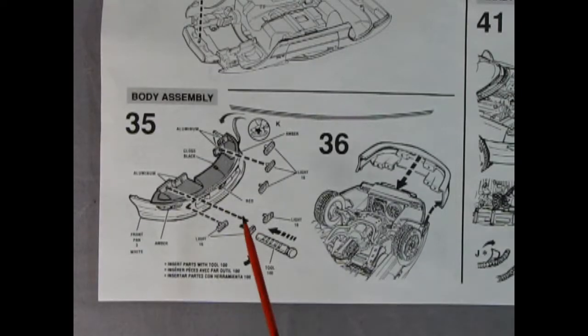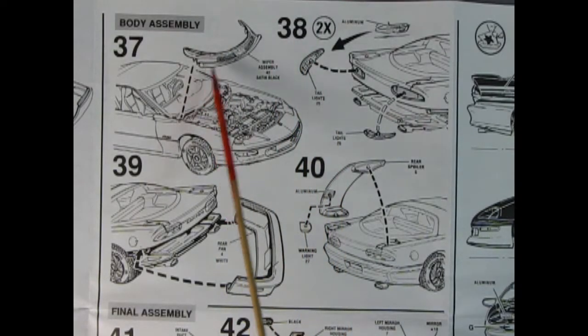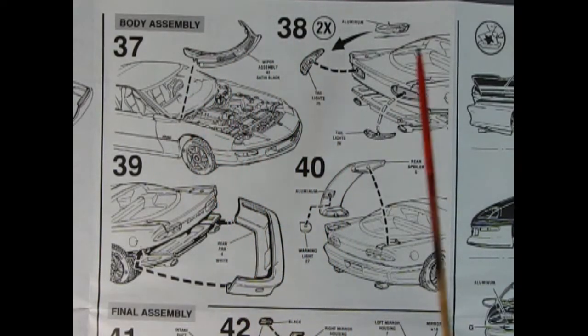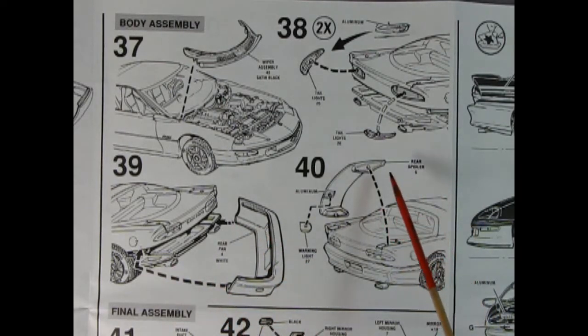Panel 35 shows the front end of the Camaro. Here's all the little rectangular headlamps and turn signal lights all being glued into place. Then it says to paint in amber and that kind of jazz. There is a tool for this that's included in the model so that's good. And then here we see the front bumper being glued in place onto the body. Panel 37 shows the wiper cowl assembly being glued into place. Panel 38 shows our rear tail lights being glued in and then panel 39 shows the bumper being attached. And in panel 40 you get the spoiler with the warning light.